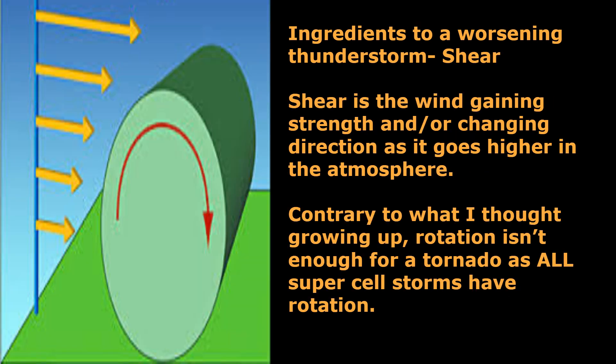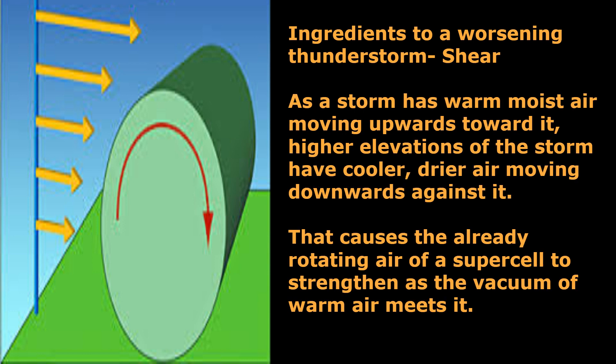That is shear. Shear is the wind gaining strength and/or changing directions as you go higher up in the atmosphere. Contrary to what I thought growing up, rotation isn't enough for a tornado, as all supercell storms have rotation in some form. As a storm has warm, moist air moving upward towards it, higher elevations of the storm have cooler, drier air moving downwards against it. That causes the already rotating air of a supercell to strengthen as the vacuum of warm air meets it.